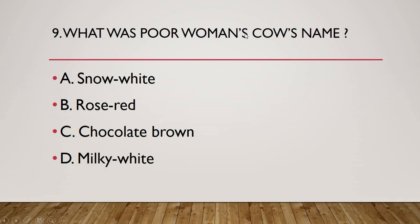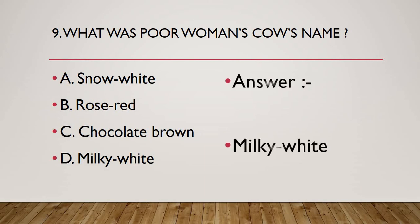Question 9: What was the poor woman's cow's name? Poor woman again means Jack's mother. Options: Snow White, Rose Red, Chocolate Brown, or Milky White. Ninety percent of you might already be answering — this is a very easy name. The correct answer is Milky White. We have repeated this many times.